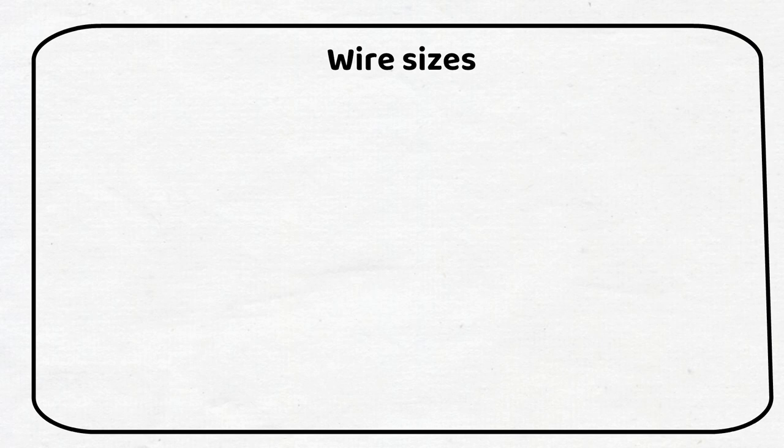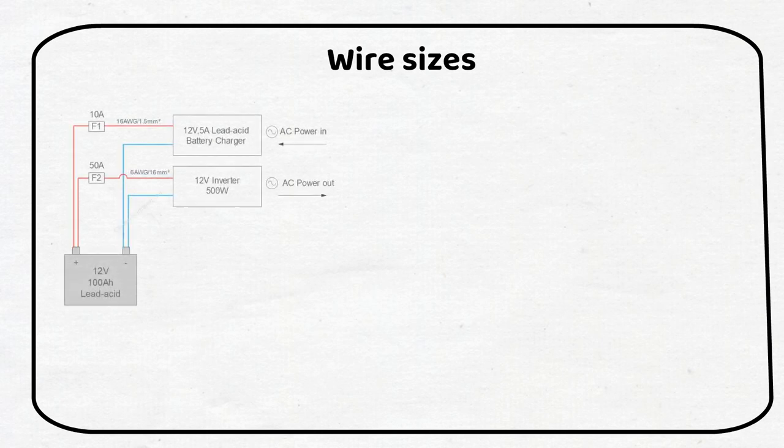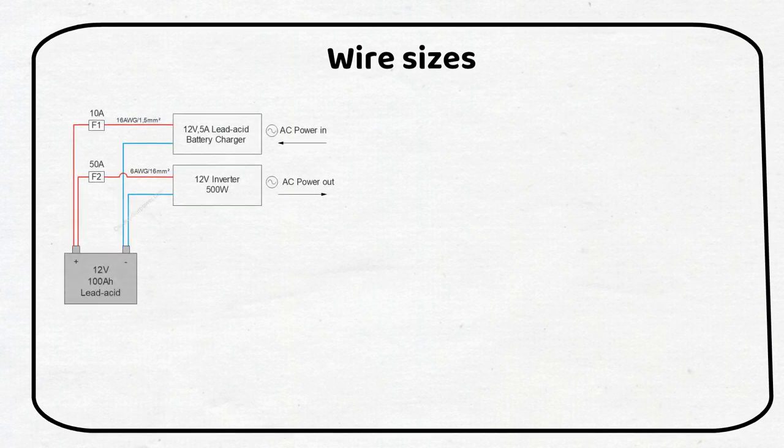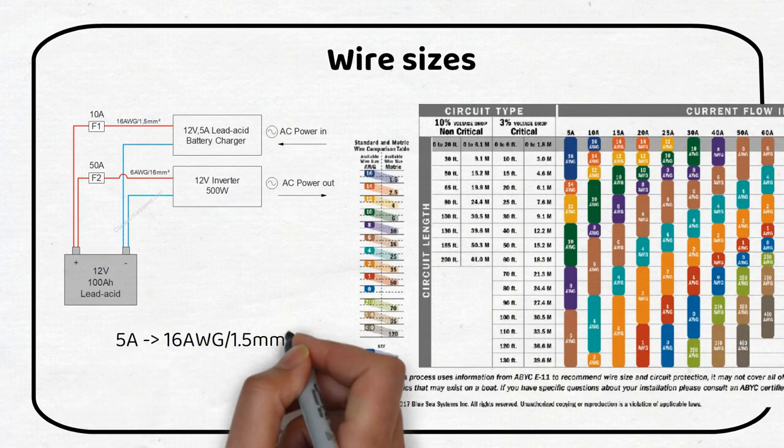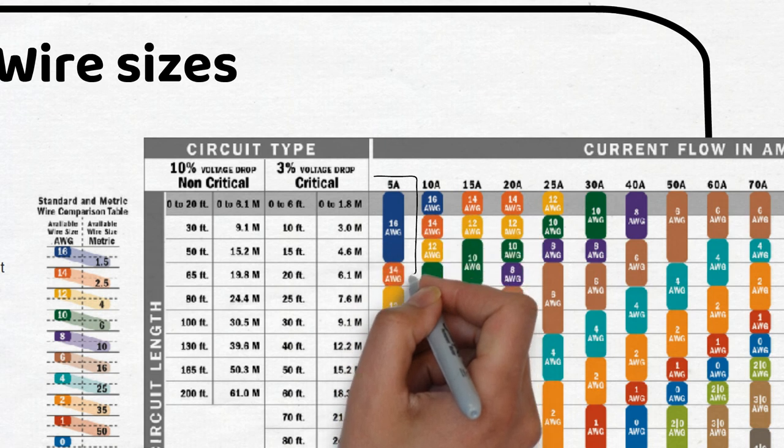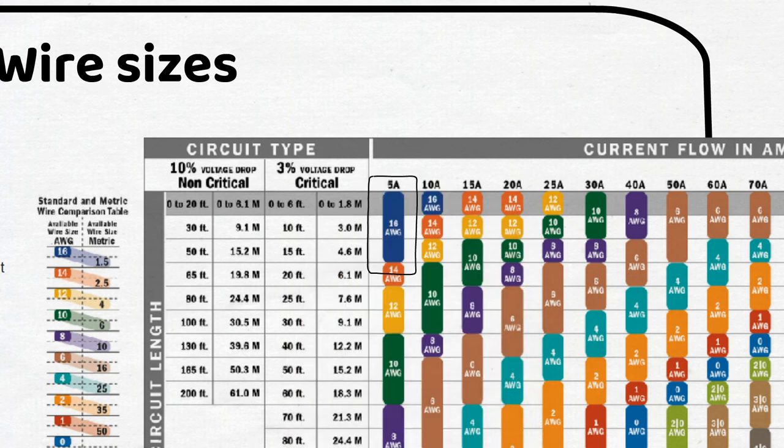Now we will take a look at the wire sizes. The charger delivers 5 amps to the battery. If we use a table we can see that we can use 16 gauge or 1.5 millimeter squared.